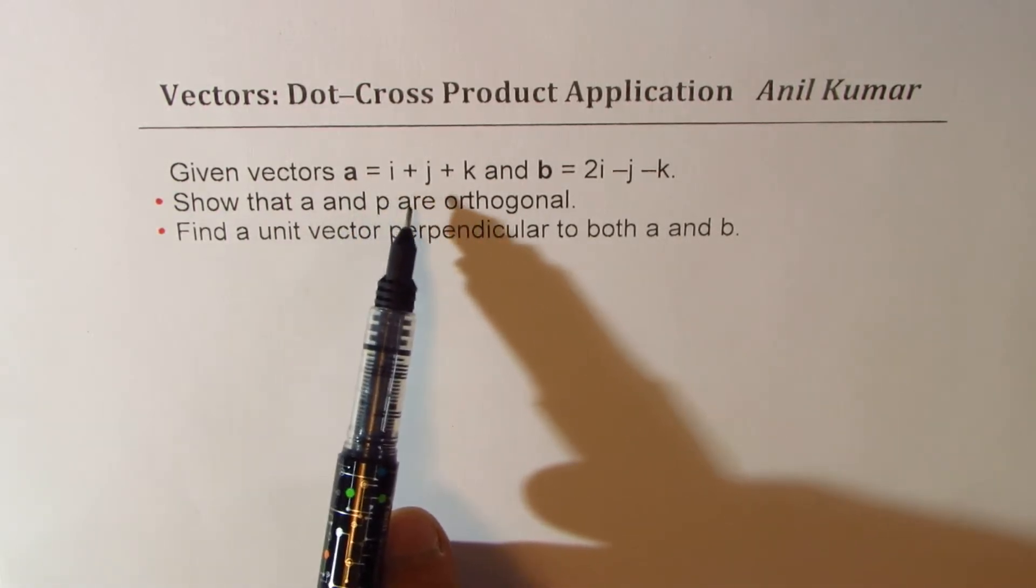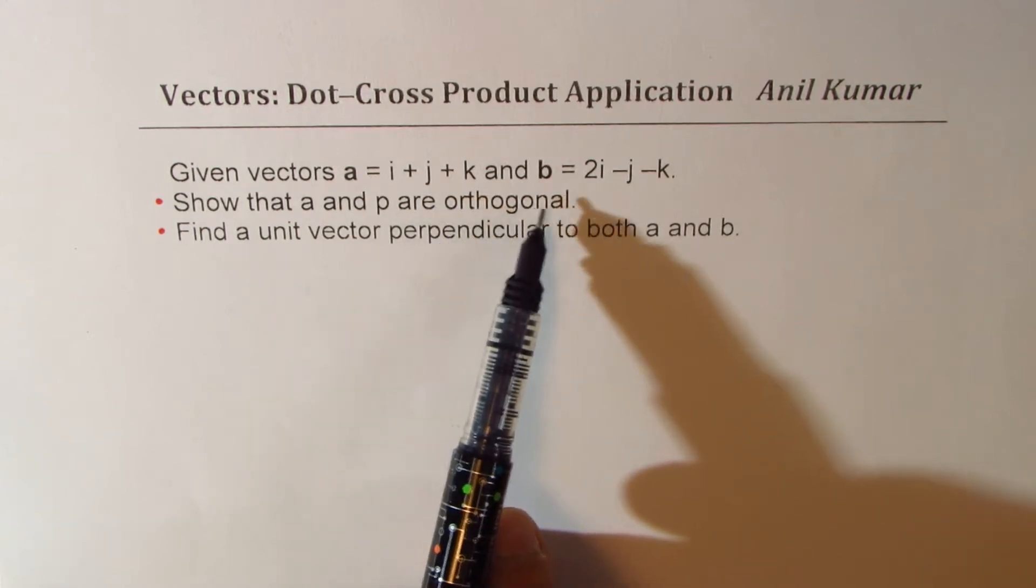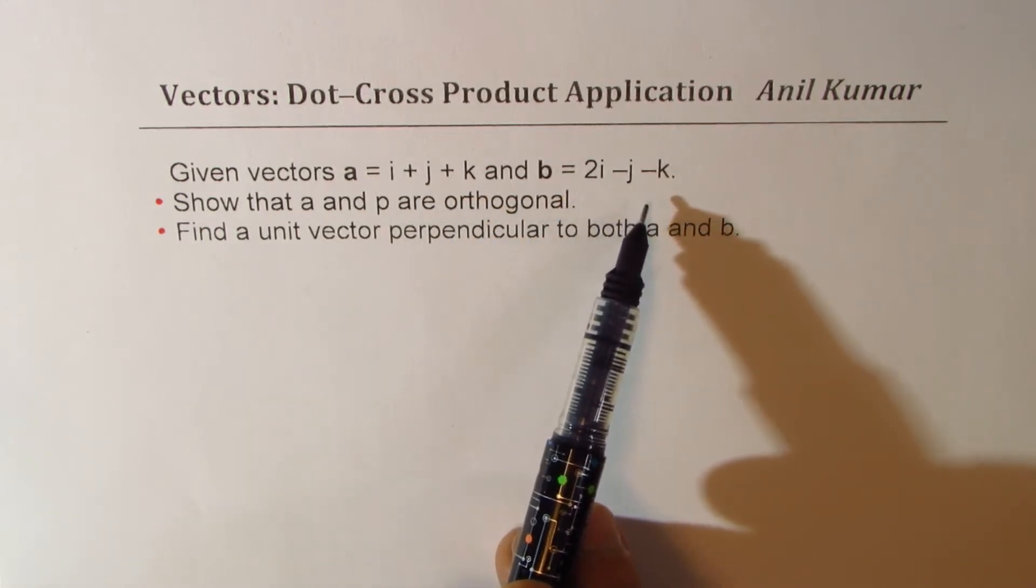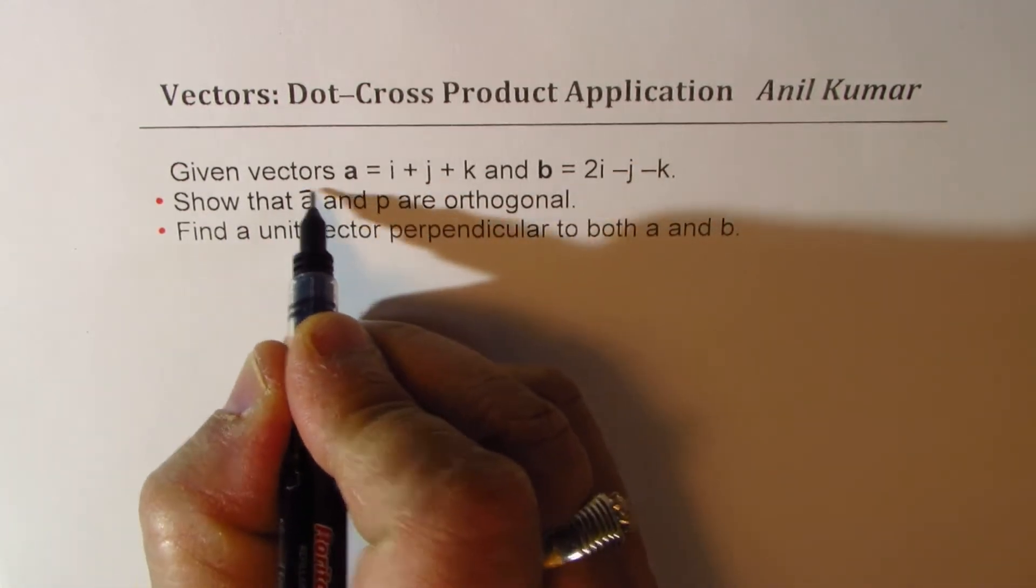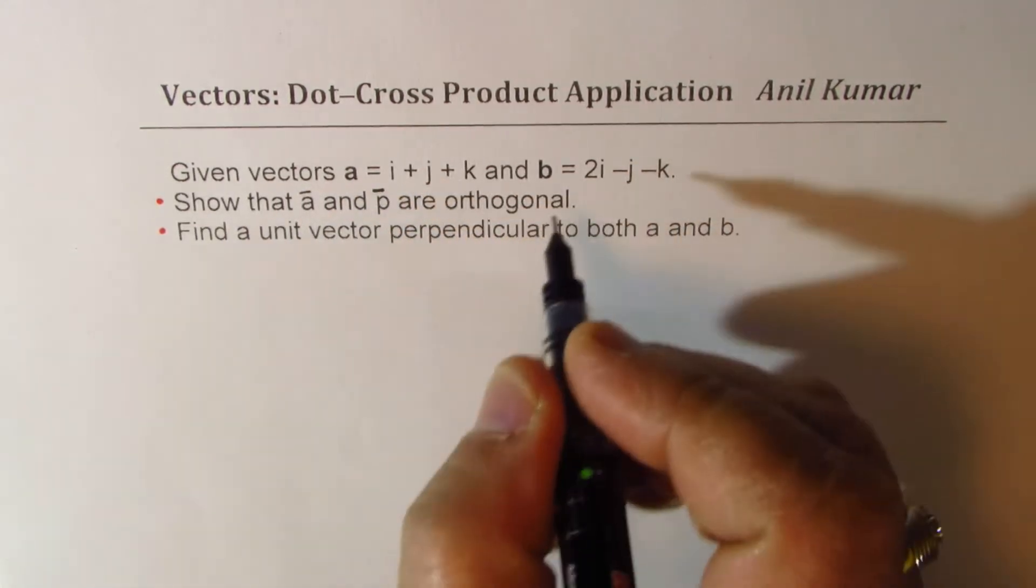We are given vectors a = i + j + k and b = 2i - j - k. We need to show that a and b are orthogonal, that means perpendicular.